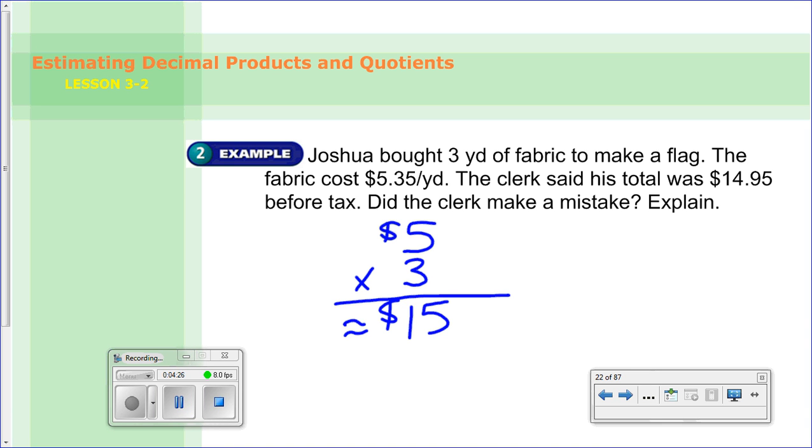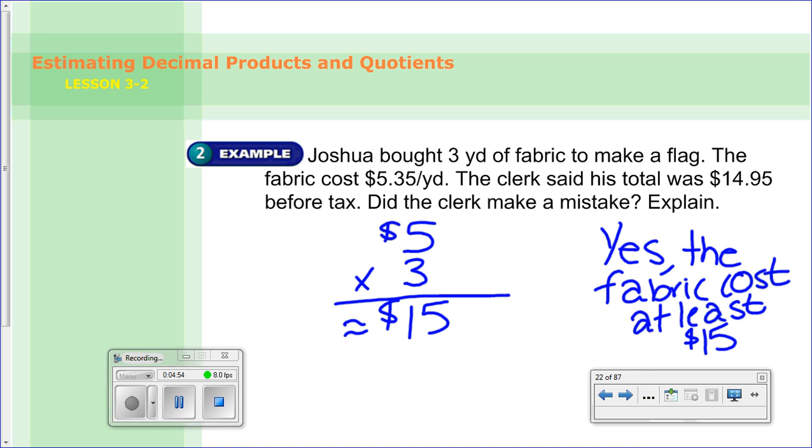Well, if we know the answer is about $15, and we round it down, because the fabric actually cost $5.35. So it's actually going to cost a little more than $15 for this fabric. So when the clerk said it cost $14.95, yes, that was a mistake. The fabric costs at least $15. Because again, we just generally rounded. We rounded down. So $15 is the bottom of the cost.